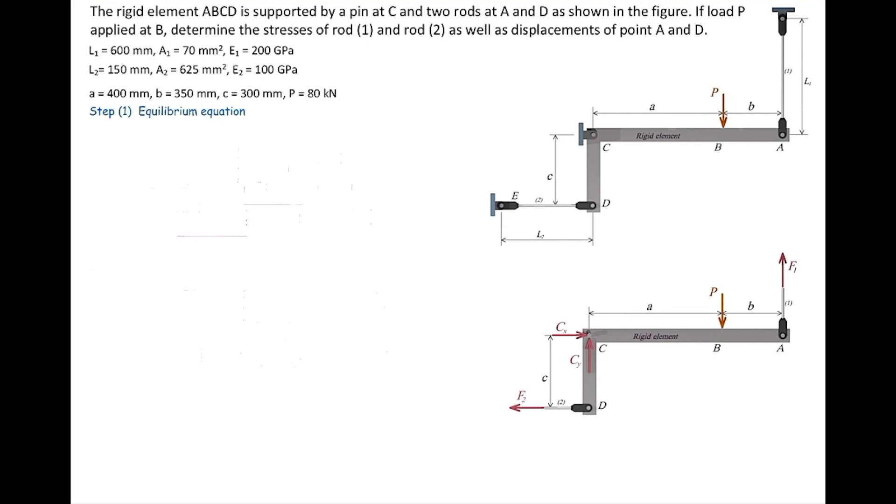In this case, P is given; F1, F2, Cx, and Cy are unknown. So there are four unknowns total. For two-dimensional problems, we have three equations: sum of forces in x-direction, y-direction, and sum of moments. We need one extra equation to solve this problem. This problem is one degree indeterminate, which means we need one extra equation from the compatibility of deformation.